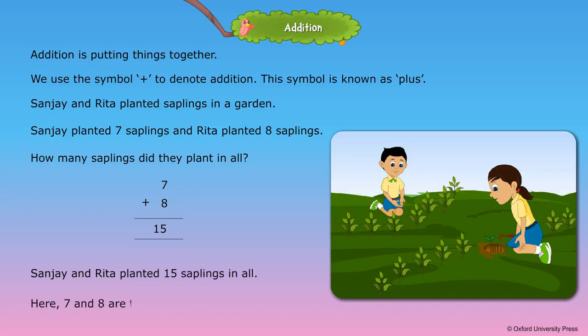Here, 7 and 8 are the addends and 15 is the sum.